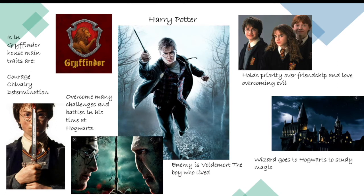Now that I've got all these related images and parts of the character's own story — relating to their personality and what happens to them in the book or movie — I'm going to go through and put in a few words outlining why each element relates to the character. Under the picture of Harry, Ron, and Hermione, I've noted that this shows he holds priority over friendships and the idea of love overcoming evil. You can be as creative or as direct as you want, as long as you're pulling elements about the character's personality, their traits, or things that tell a story.